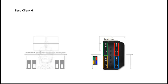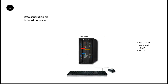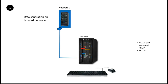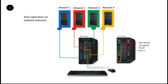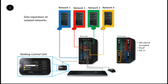By the time the fourth zero client gets there, it's replaced essentially four stand-alone PCs. All the zero clients are connected to the secure KVM. Let's take a look at the back end — the network and domains. We've got four different networks, combinations of classified, unclassified, completely open, sensitive but unclassified — each connecting to its own zero client.